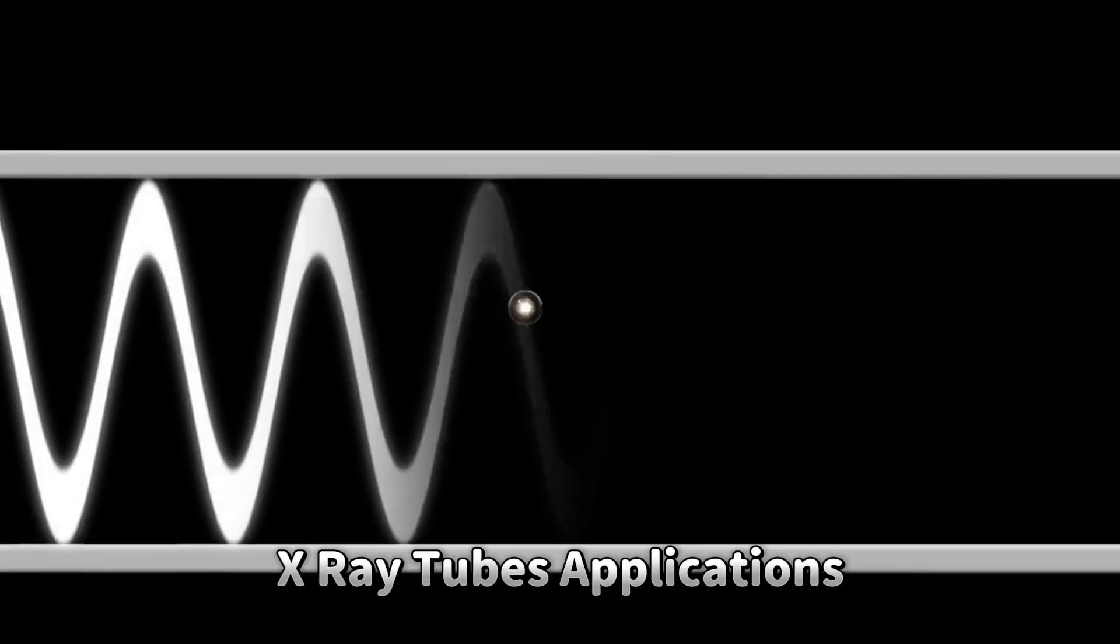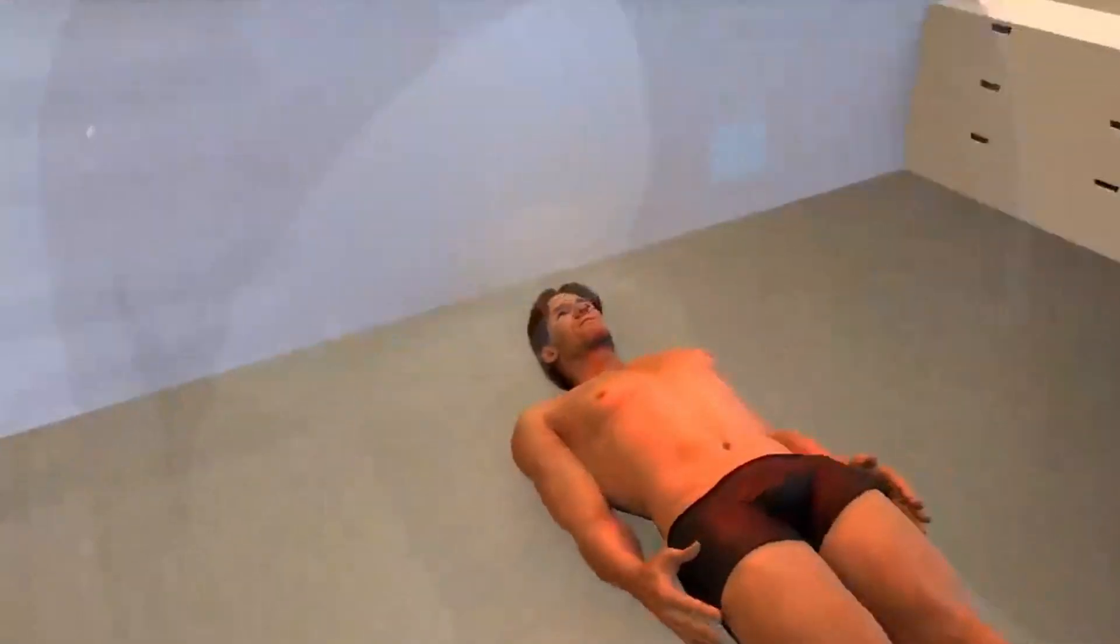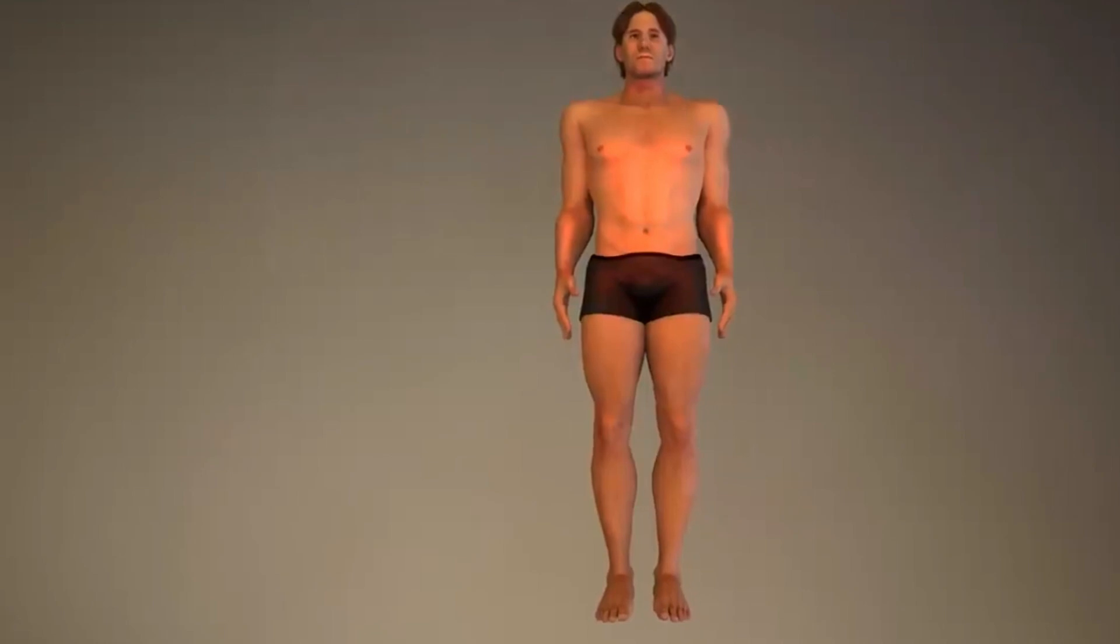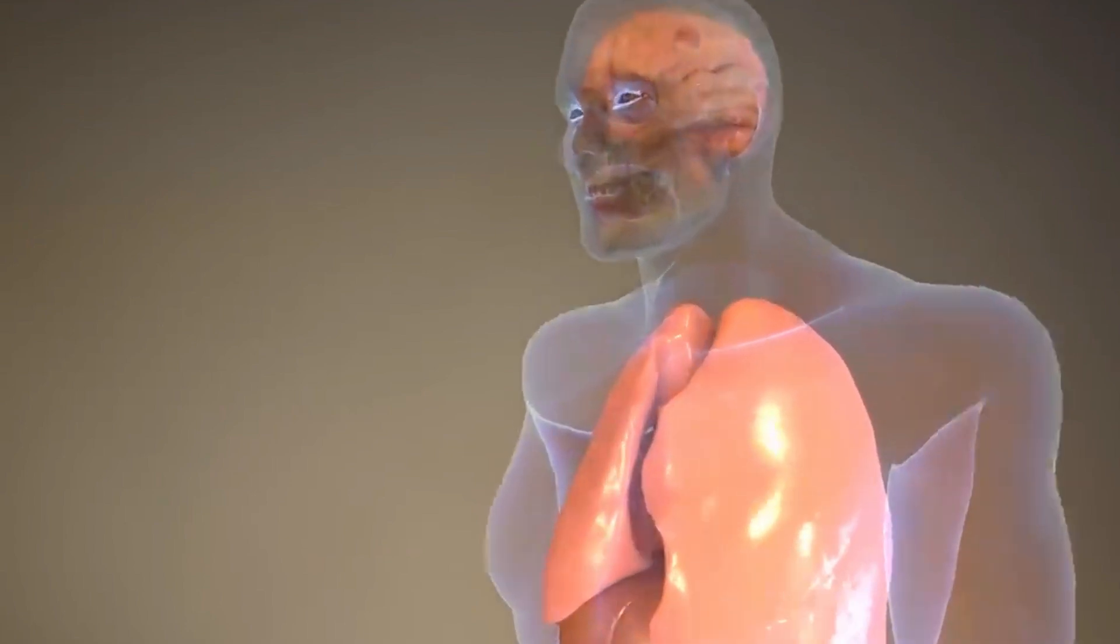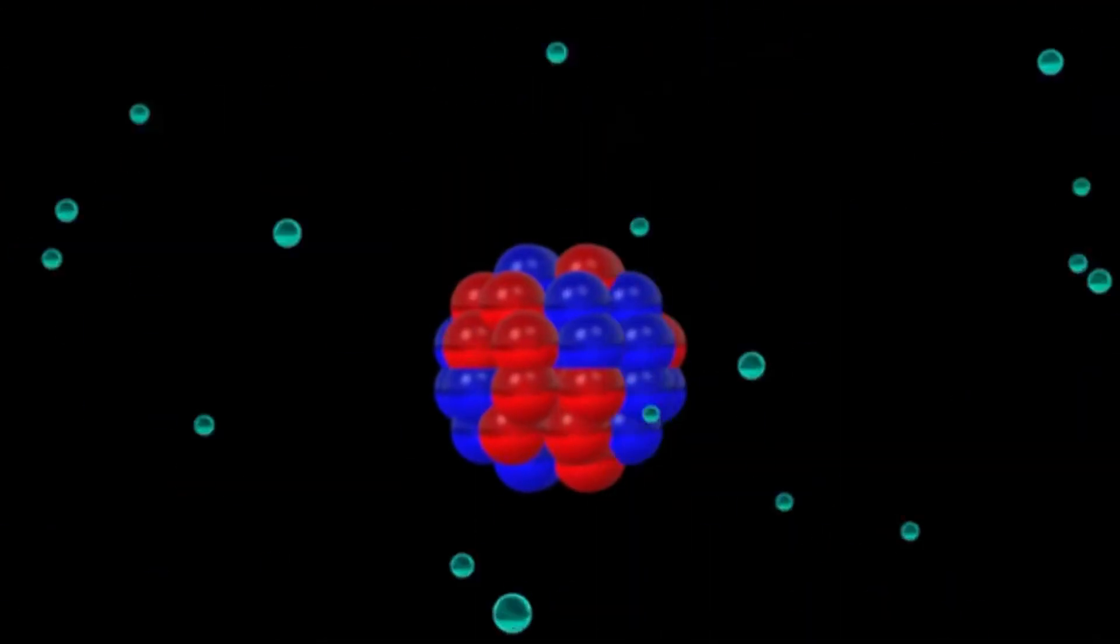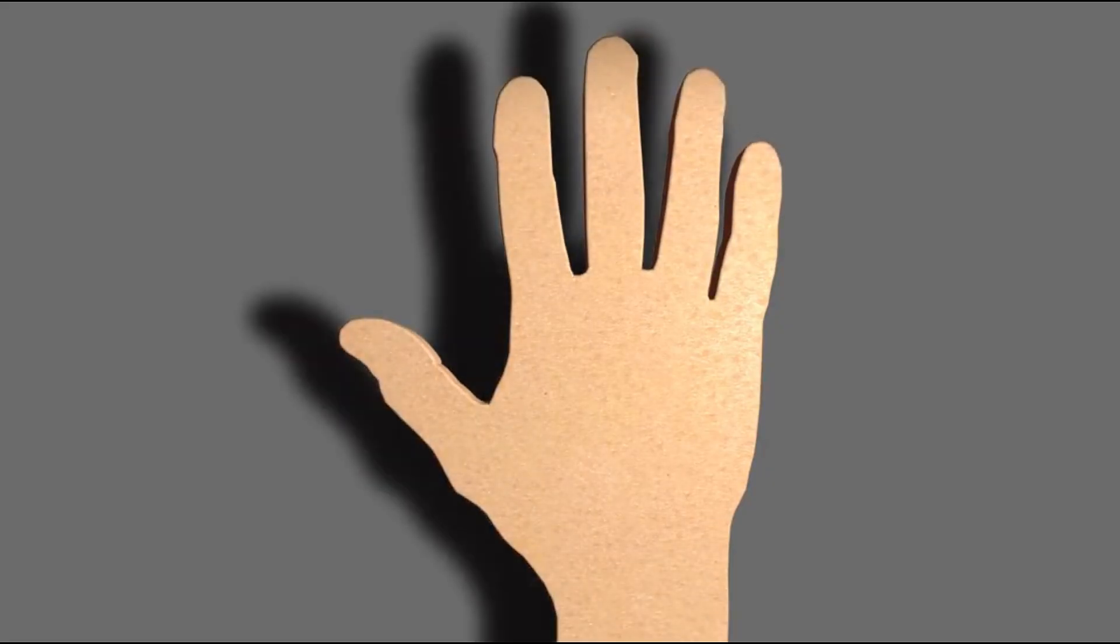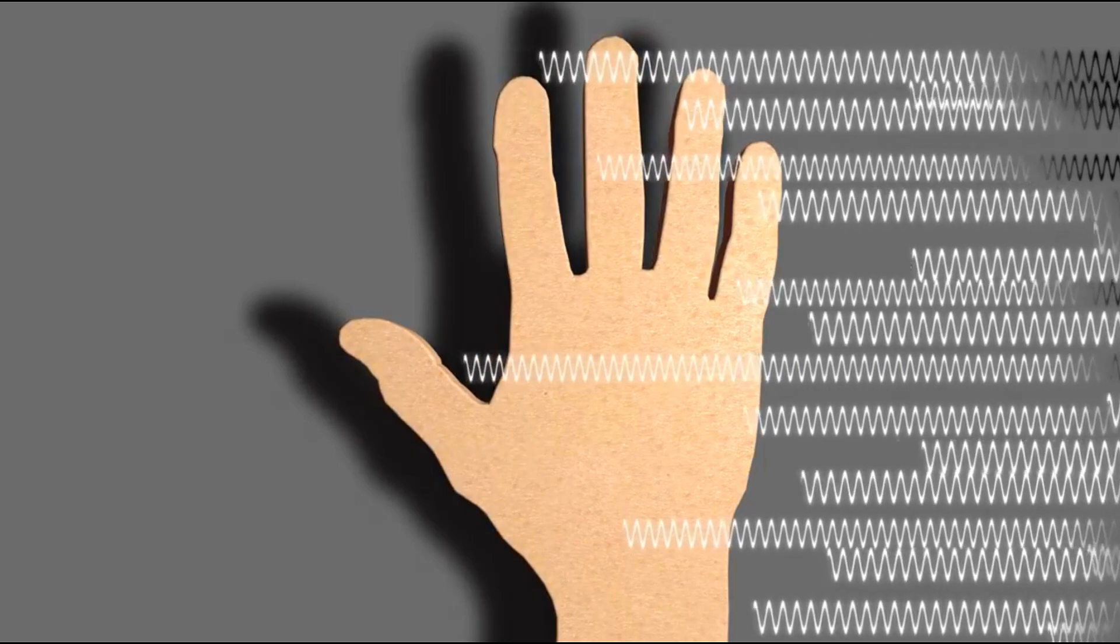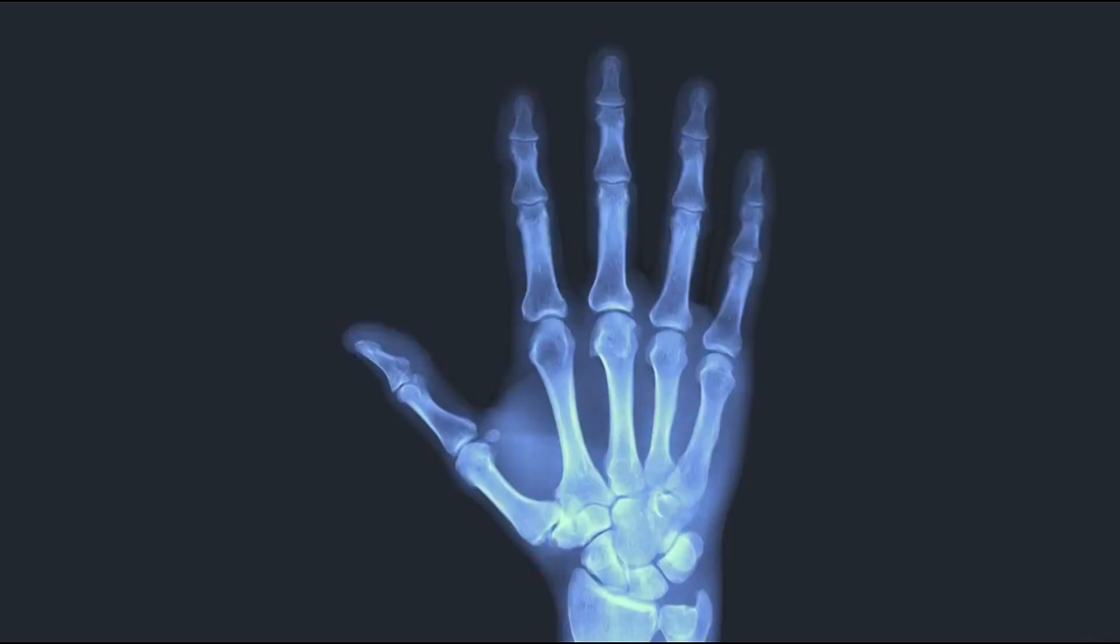Osmium alloys find application in X-ray tubes, crucial components of medical imaging equipment used for diagnostic purposes. These alloys possess excellent thermal stability and structural integrity, allowing X-ray tubes to operate efficiently at high temperatures and radiation levels. Osmium-based materials contribute to the reliability and performance of X-ray imaging systems, ensuring accurate and detailed medical diagnostics for patients.